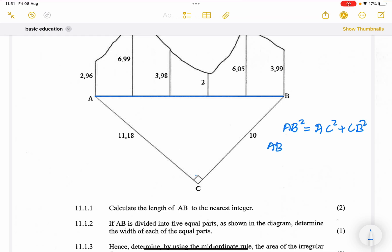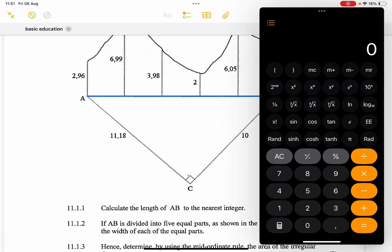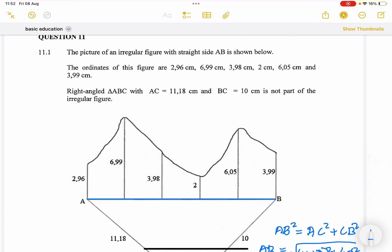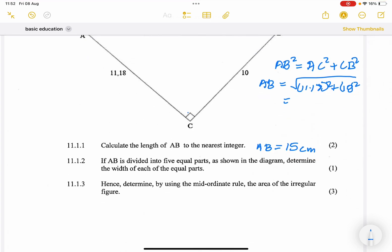So we can say that AB squared is equal to AC squared plus CB squared. So AB, that would be the square root of 11.18 squared plus 10 squared. Let's work that out quickly. I get 14.99, so that's approximately 15. They said to the nearest integer, so that means AB is simply equal to 15 centimeters.